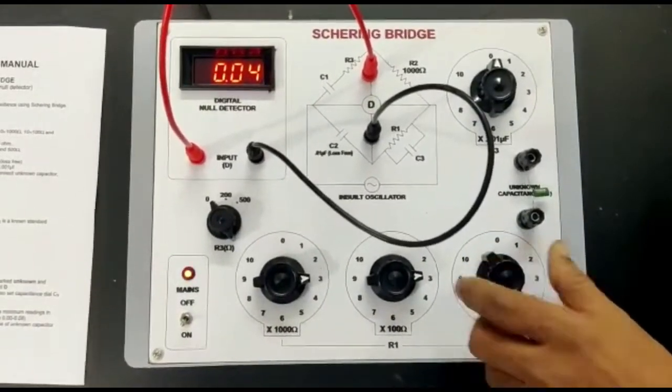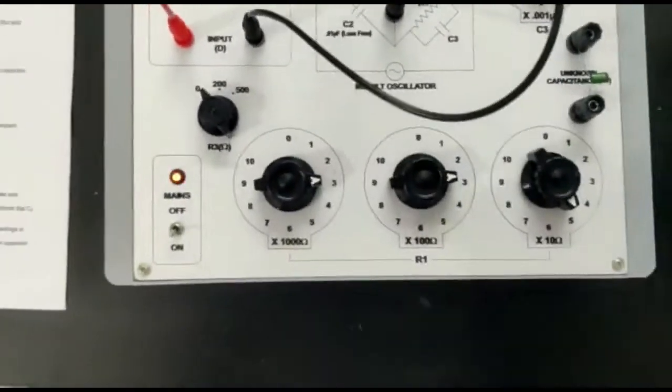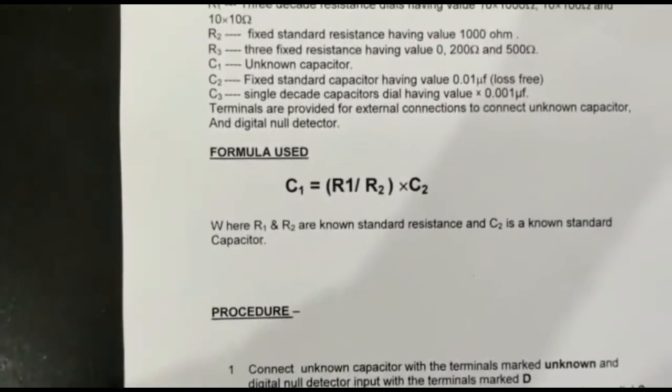So this is our minimum reading, the balance point. Put these values into the formula to calculate the unknown capacitance.